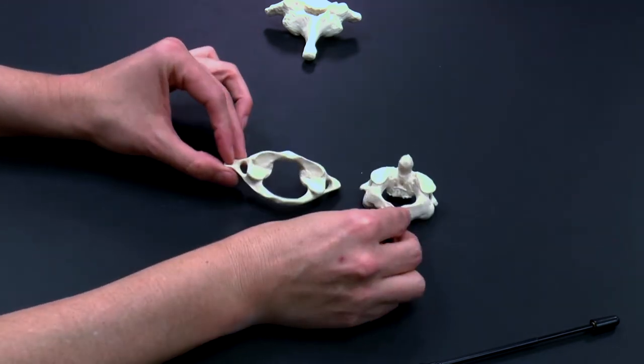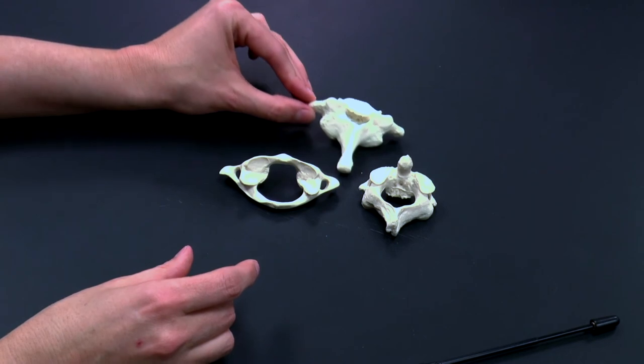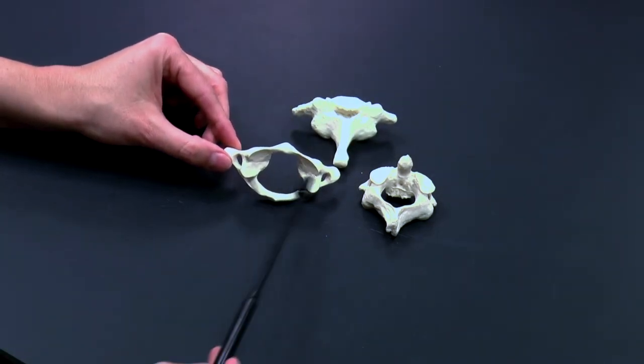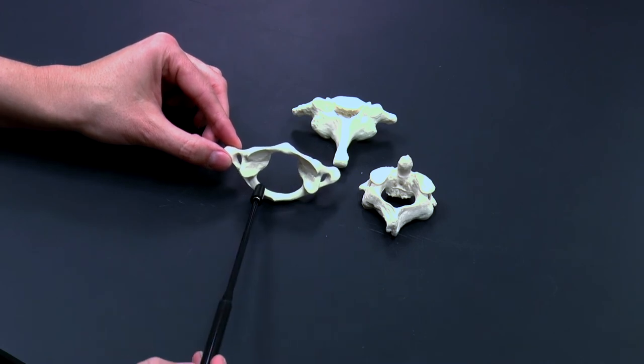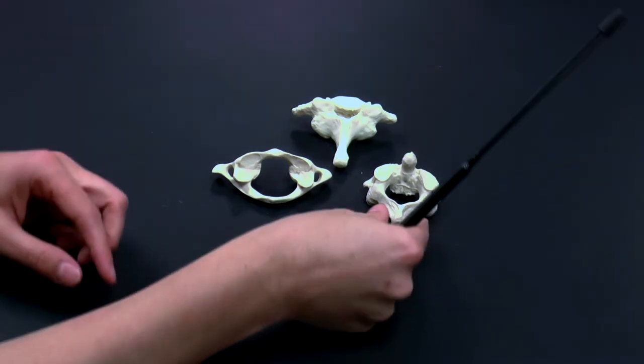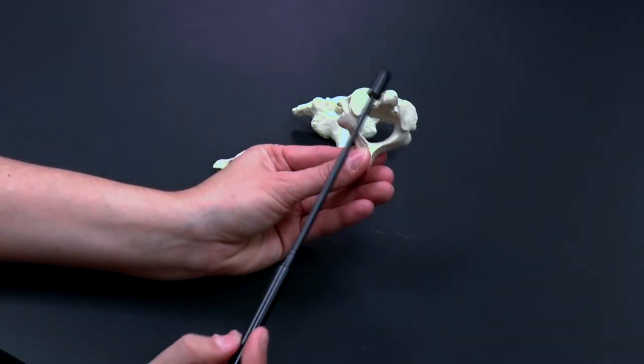So these are three cervical vertebrae that you can see here. And again, here you have the atlas—I'm sorry, the atlas C1, and the axis C2, with the dens.